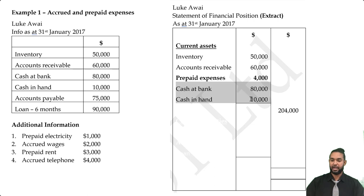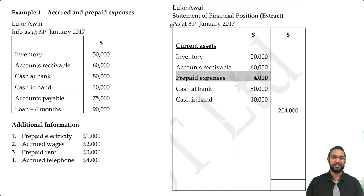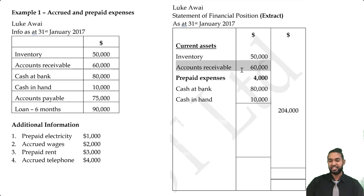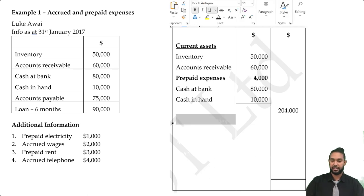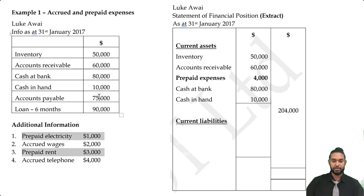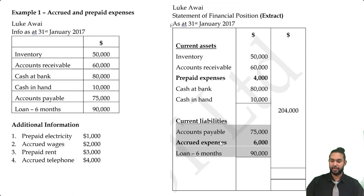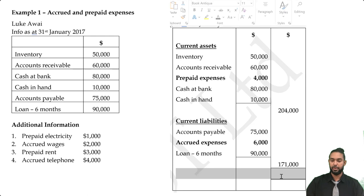Prepaid expenses are more permanent than cash at bank and cash in hand because cash is already liquid, whereas prepaid expenses represent benefits we expect to receive in the near future rather than immediate cash. They're considered less permanent than accounts receivable since there's slightly less risk involved. After prepaid expenses, we list cash at bank and cash in hand, then get a subtotal. For current liabilities we have accounts payable, loan, accrued wages, and accrued telephone, then subtract current liabilities from current assets to show net working capital.